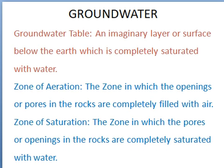Groundwater is also a very essential mineral resource present below the earth, used for several purposes. The groundwater table is an imaginary layer or surface below the earth which is completely saturated with water. The zone of aeration is the zone in which the openings or pores in the rocks are completely filled with air, while the zone of saturation is the zone in which the pores or openings in the rocks are completely saturated with water.